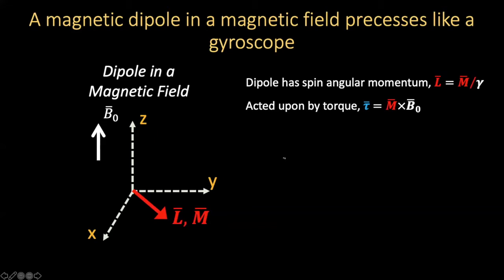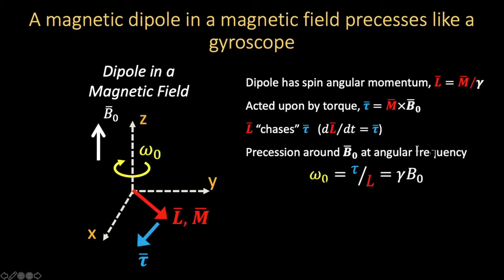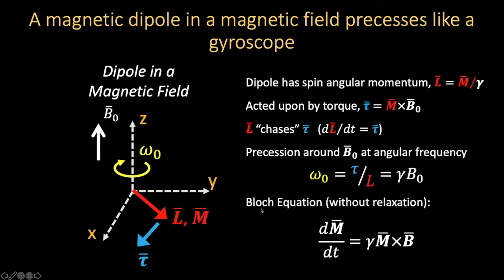We have a complete analog of this in MRI, where we now have a magnetic dipole in a magnetic field. The dipole has spin angular momentum L given by the magnetization divided by the gyromagnetic ratio. Due to being in an external magnetic field, it is acted on by a torque — when you have magnetization in an external magnetic field, there's a torque on that magnetization. That torque is perpendicular to the angular momentum and the angular momentum will chase the torque, resulting in precession around our B0 field. The precession frequency is directly proportional to the strength of the magnetic field.